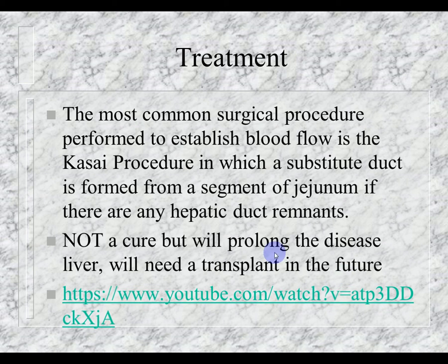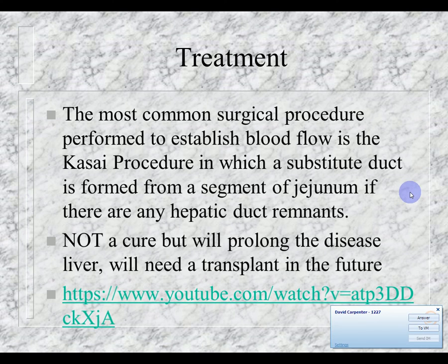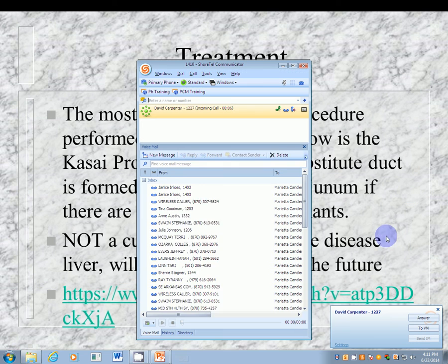Treatment: the most common surgical procedure to establish bile flow is the Kasai procedure, in which a substitute duct is formed from a segment of the small intestine connected to hepatic duct remnants. This is not a cure but prolongs the diseased liver until a transplant is needed. This procedure must be performed by 2 months of age, otherwise too much damage has occurred and it will not be effective. If untreated, the median age of lifespan is 19 months.